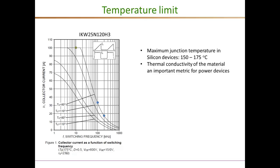A major limiting factor for power devices is the junction temperature. For silicon devices, the maximum junction temperature cannot exceed 150 to 175 degrees Celsius — this is an absolute limit, and practical designs operate well below these numbers. For the device we have been considering, a plot shows how the collector current must be derated with increasing switching frequency due to the thermal limit. At around 10 kilohertz, you can have almost 100 amperes collector current, but as you approach 100 kilohertz, the current is limited to about 30 amperes, and around 200 kilohertz, it drops to less than 20 amperes.